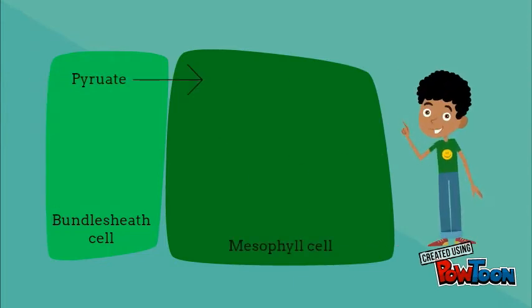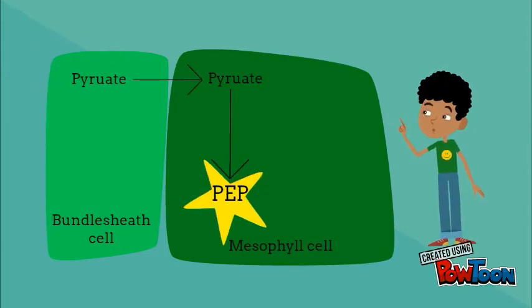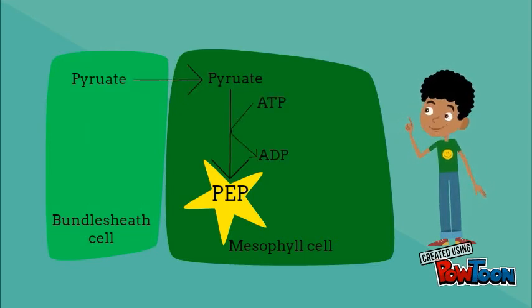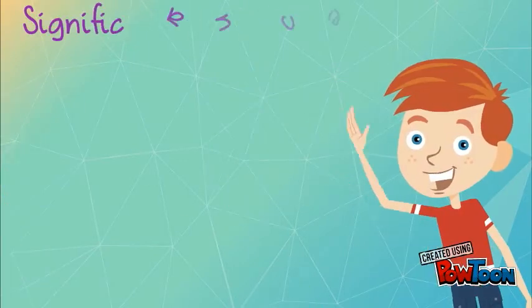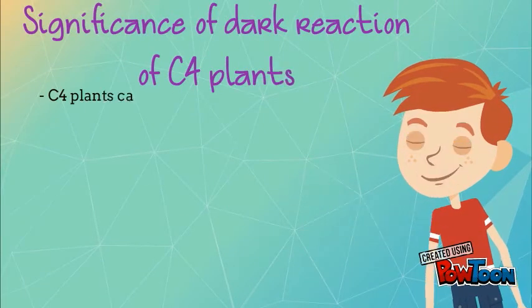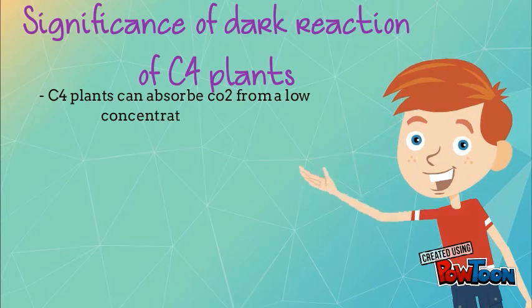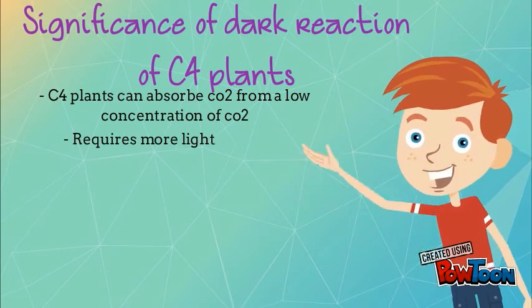The liberated CO2 is accepted by RuBP and enters the Calvin cycle. The pyruvic acid formed is transported back to the mesophyll cells, where phosphoenolpyruvic acid is regenerated by using ATP produced in the light reaction.